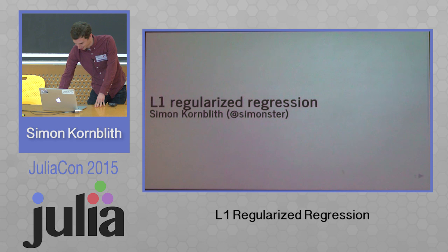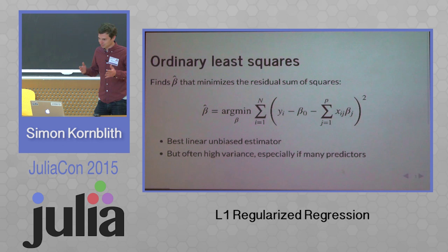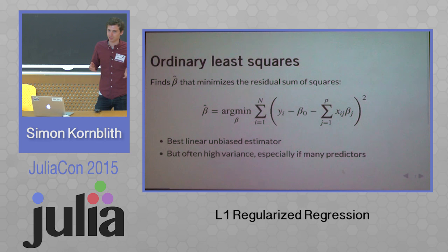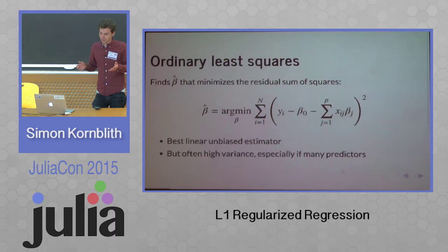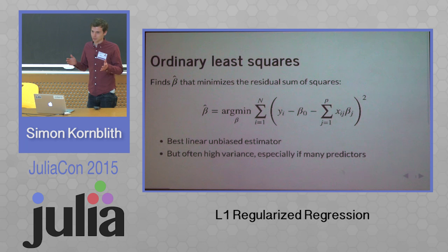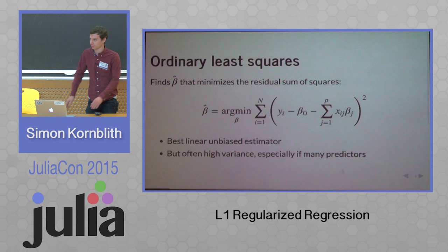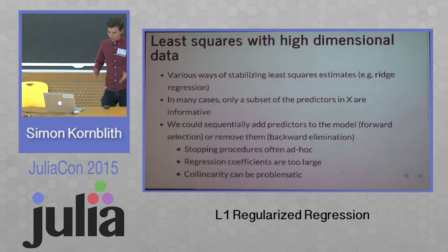Most people in the room are probably familiar with ordinary least squares. The idea is you're minimizing the sum of the squared residuals. It's the best linear unbiased estimator. If you have a lot of data, it works really well. But often it gives you coefficients that have really high variance, especially if you have many predictors and not very many observations.